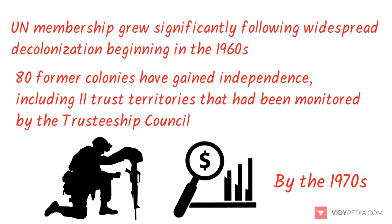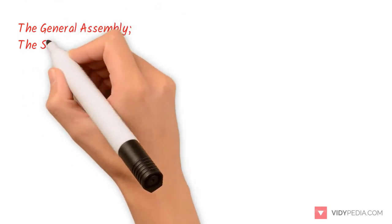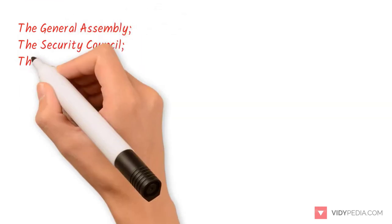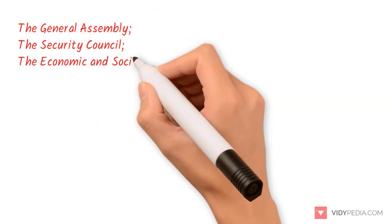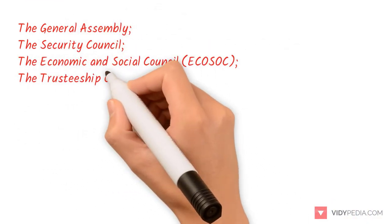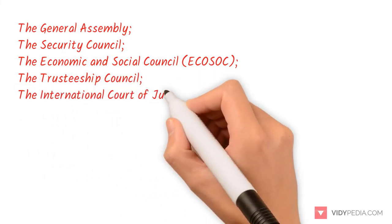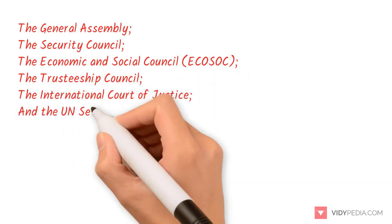The UN has six principal organs: the General Assembly, the Security Council, the Economic and Social Council, the Trusteeship Council, the International Court of Justice, and the UN Secretariat.